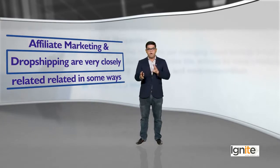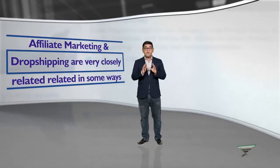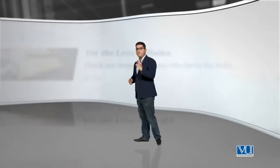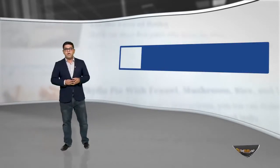Affiliate marketing and dropshipping are very closely related in some ways. But the only difference is ke dropshipping ki case mein, aap ke customer ko lag raha hota hai ke you own the product — ya product aap ke taraf se hi sell ho raha hai. As compared to affiliate marketing, jis mein aap safe marketing kar raha hota hai. Toh kya hai woh five-step process jis se dropshipping kaam karti hai?